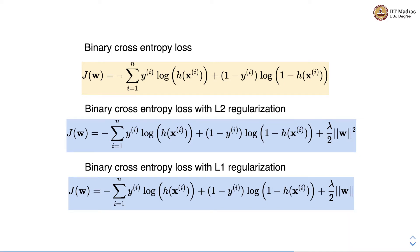Remember, in the previous video we talked about binary cross entropy loss. It is defined as J of w, where w is a weight vector, equal to negative of sum over 1 to n of yi log of h(xi) plus (1 minus yi) log of (1 minus h(xi)). Here yi is the actual label and h(xi) gives us the predicted label.